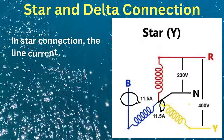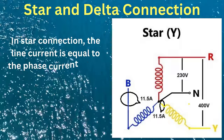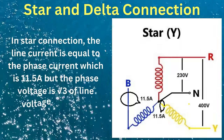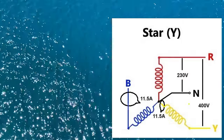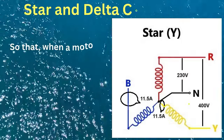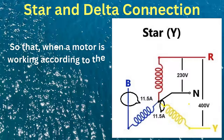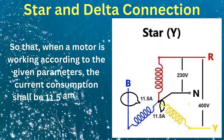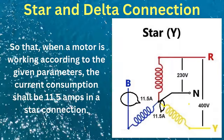In a star connection, the line current is equal to the phase current, which is 11.5 amps, and the phase voltage is the line voltage divided by root three — that is 400 volts divided by root three, equals 230 volts. So when a motor is working in a star connection according to these parameters, the current consumption will be 11.5 amps.